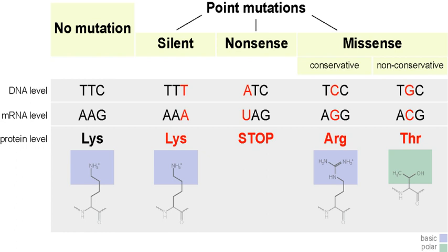Start gain creates an AUG start codon upstream of the original start site. If the new AUG is near the original start site, in frame within the processed transcript and downstream to a ribosomal binding site, it can be used to initiate translation, with the likely effect of additional amino acids added to the amino terminus of the original protein. Start loss is a point mutation in a transcript's AUG start codon, resulting in the reduction or elimination of protein production.